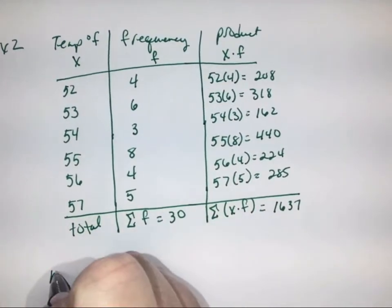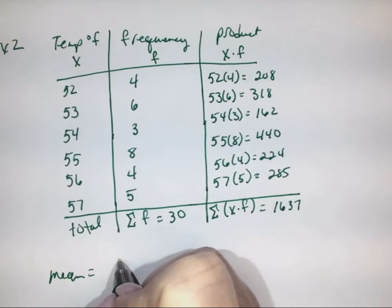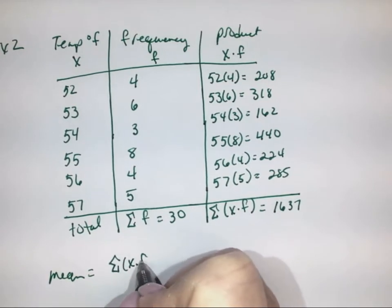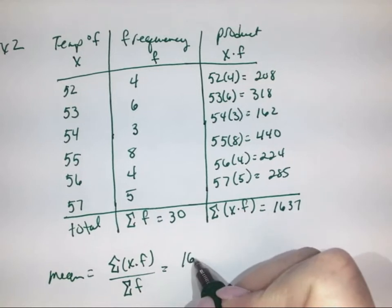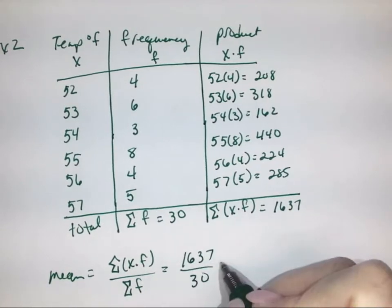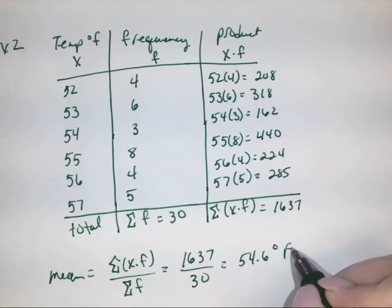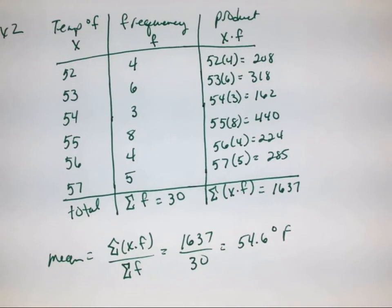Now to find our mean, we're going to use our formula of the summation of x times f divided by the summation of f. That is our value of 1637 divided by 30, which gets us 54.6 degrees Fahrenheit. This tells us that the power plant, the nuclear power plant, is most likely not the cause because the temperatures aren't too hot. They range from 52 to 57, so that's not a too hot range for the fish.